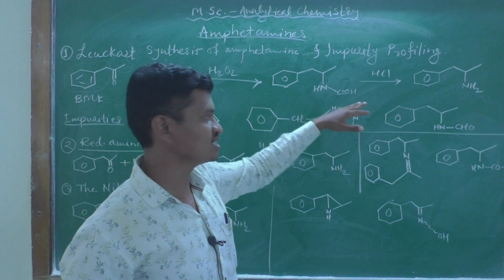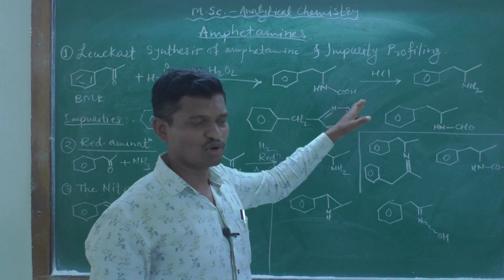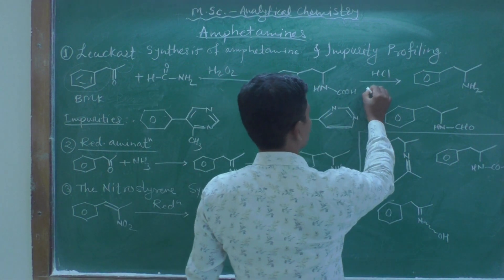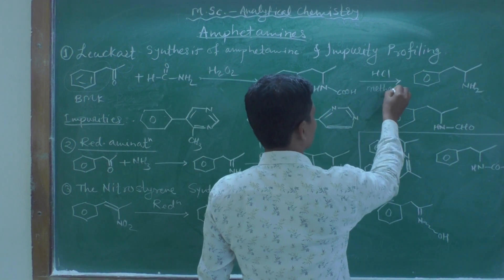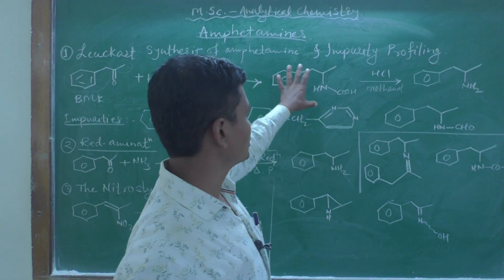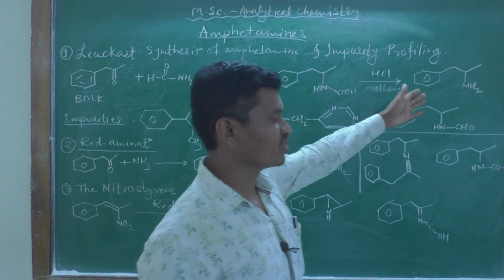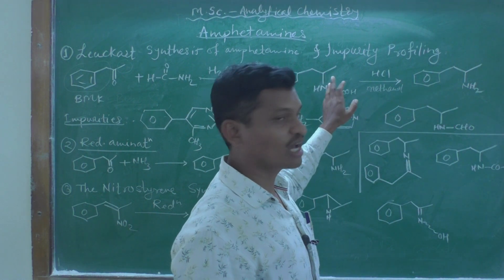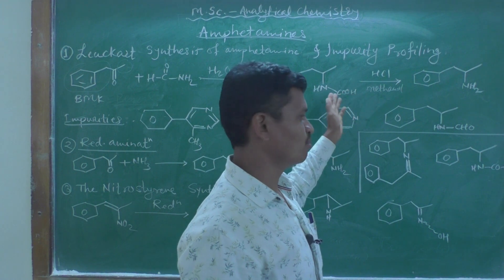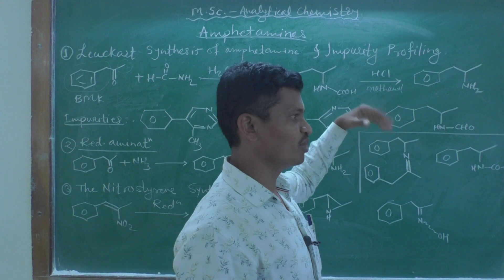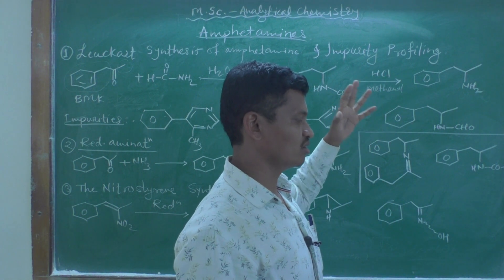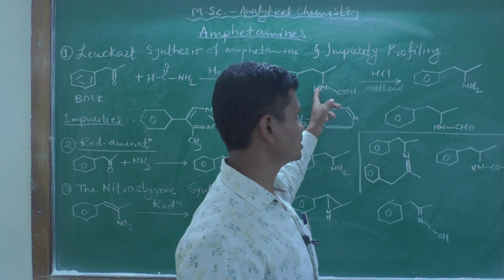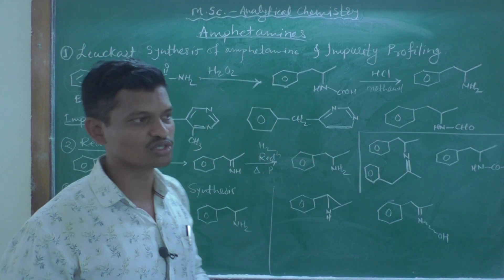The reaction between benzyl methyl ketone and formamide proceeds in the presence of an oxidizing agent, hydrogen peroxide (H2O2). This gives an intermediate where the CHO moiety is oxidized into a carboxylic acid moiety. Then in methanolic HCl, decarboxylation takes place — a CO2 molecule escapes from this molecule, and hydrogen goes to the nitrogen.